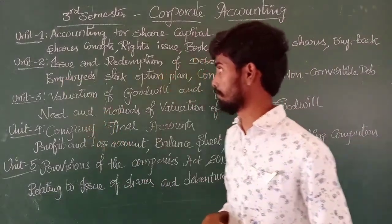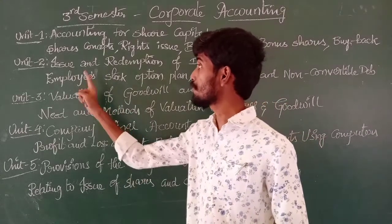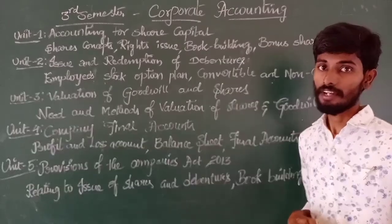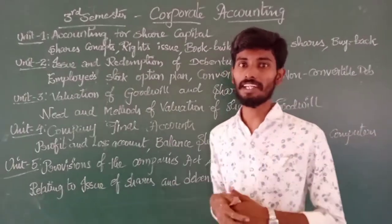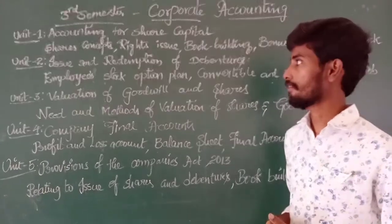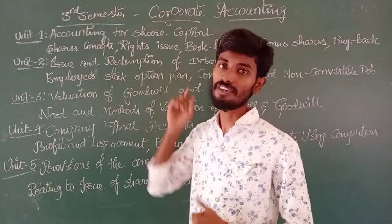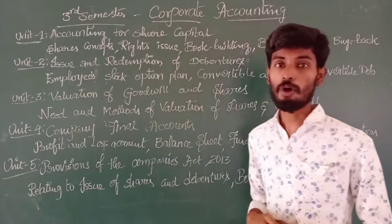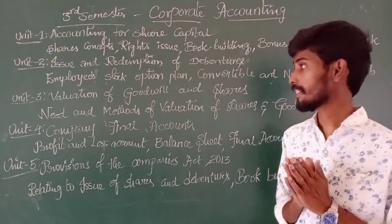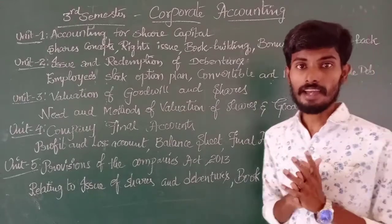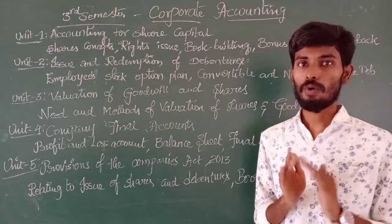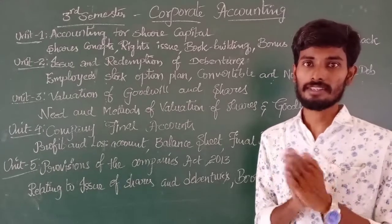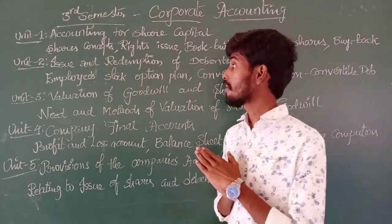In second unit, we have to see the issue and redemption of debentures. A debenture is an instrument containing information about a loan. In this second unit, we are also going to see the Employee Stock Option Plan, convertible debentures, and non-convertible debentures — what they are and the differences between them. That is the second unit.